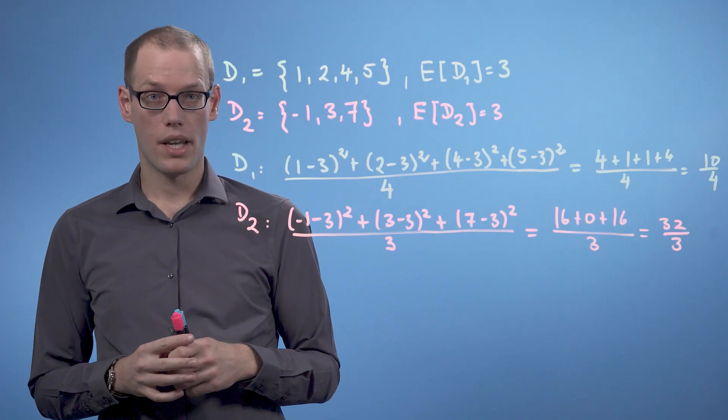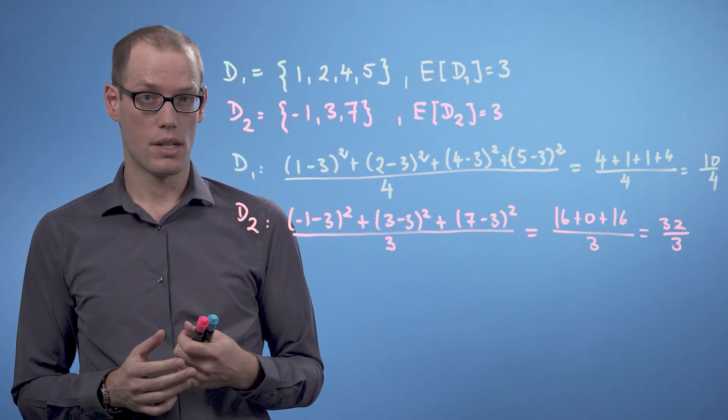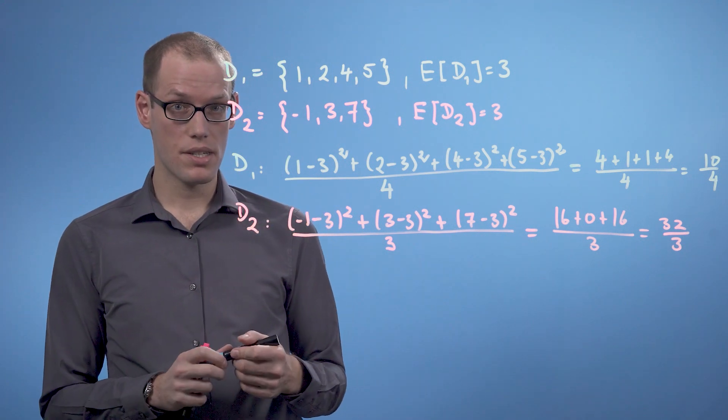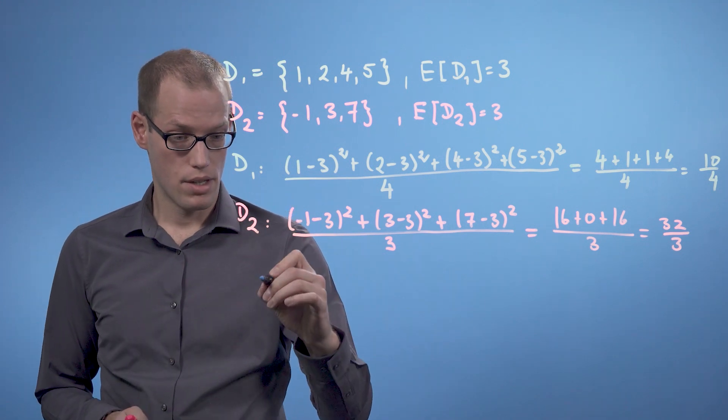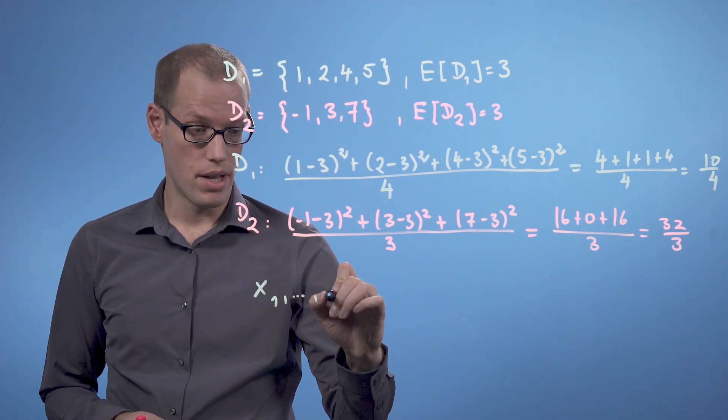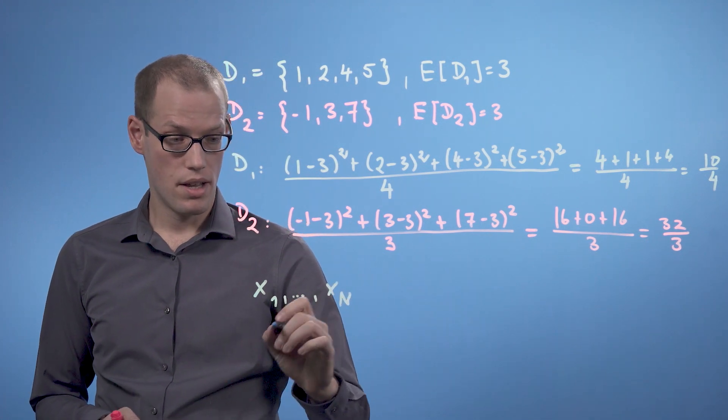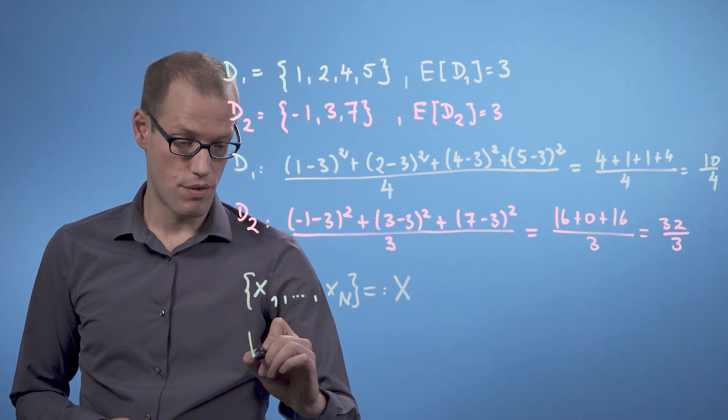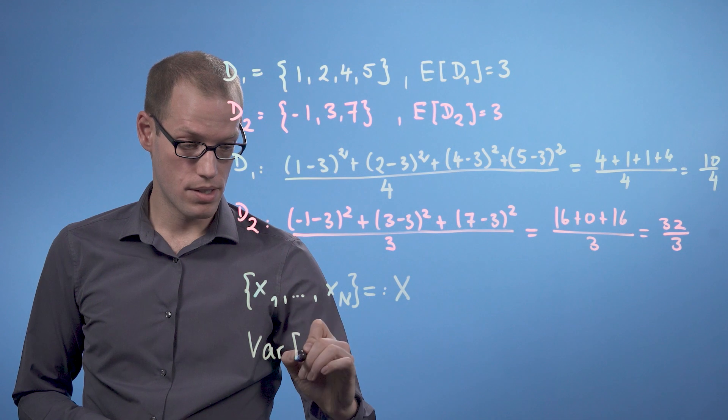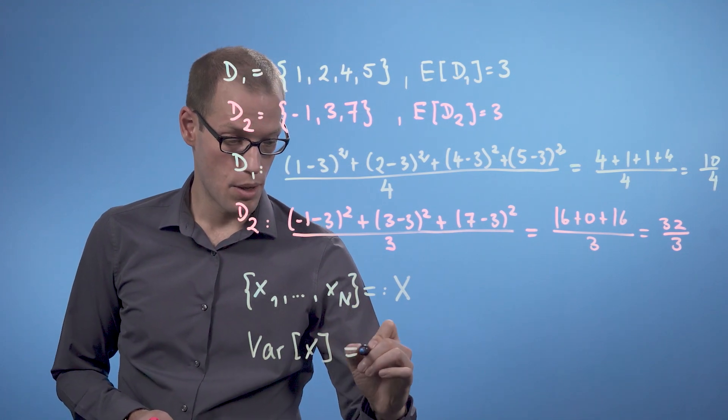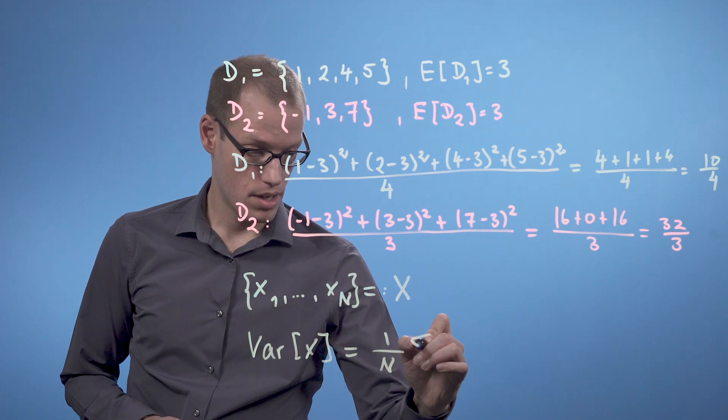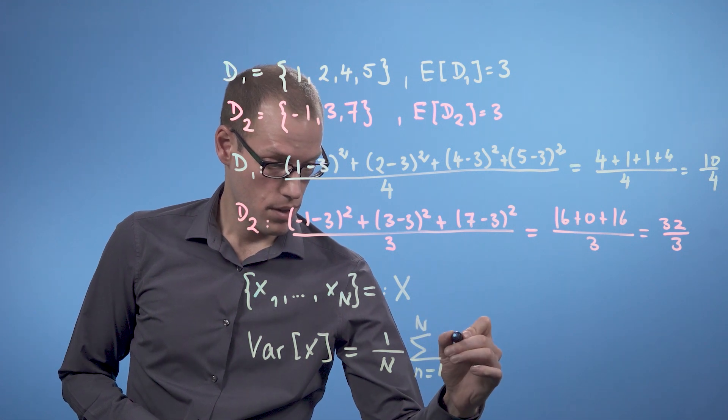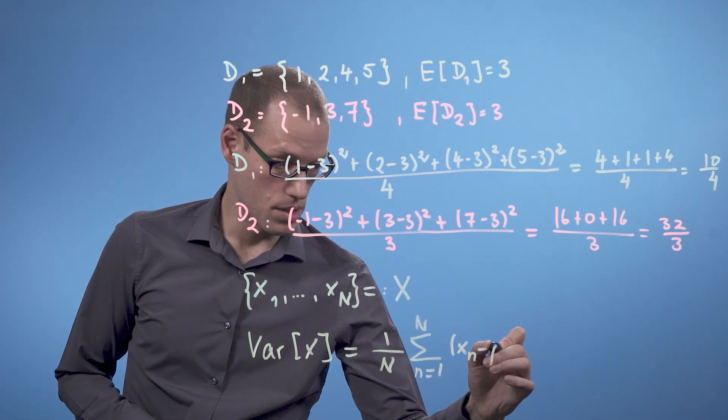So what we have done can be formalized. So assuming we have a data set consisting of n data points x1 to xn, then we can define the average squared distance as the following. So we have x1 up to xn, and then we define this to be our data set X, and we define now the variance of this data set to be 1 over n times the sum of small n equals 1 to big N of xn minus μ squared.